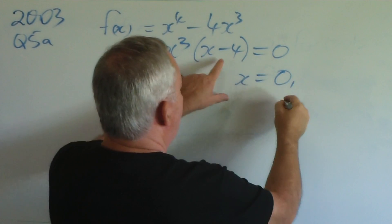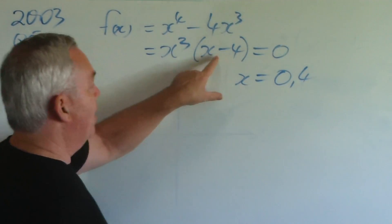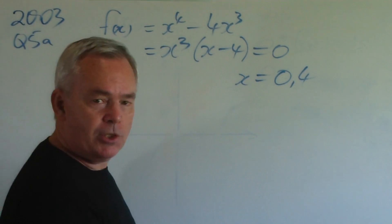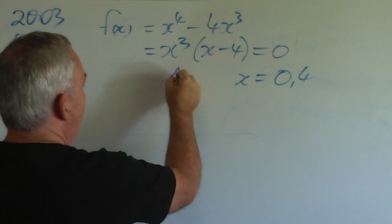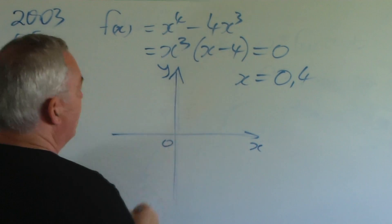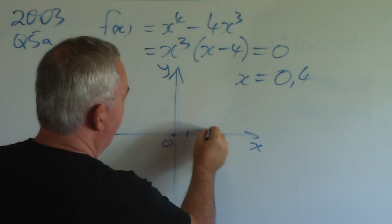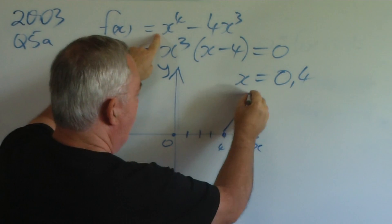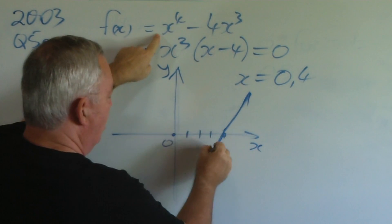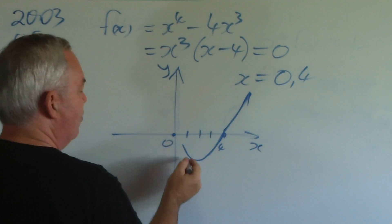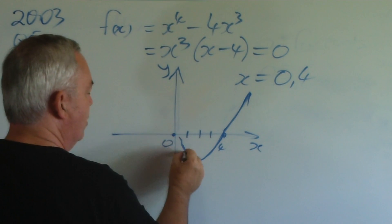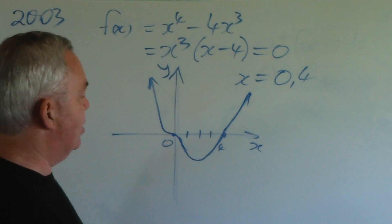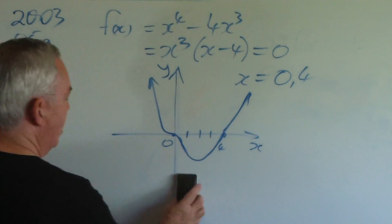The roots, of course, are at zero and at four. And the root at zero is a triple root, which means that the curve will pass through it in an S shape. We draw the axis, root at zero, root at four. Being a positive leading coefficient, the graph is going up. It passes through four, comes up towards zero, but instead of bouncing or going straight through, it goes through with a slight bend like that.